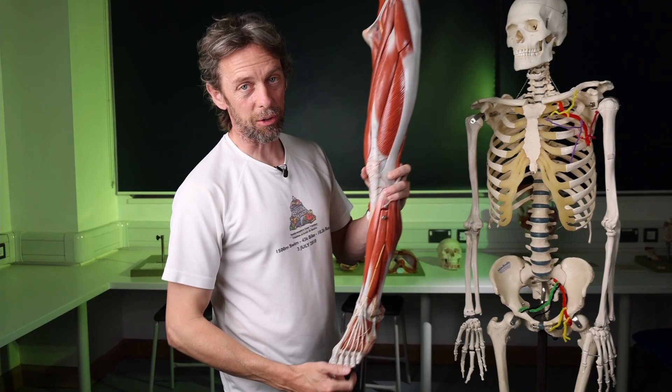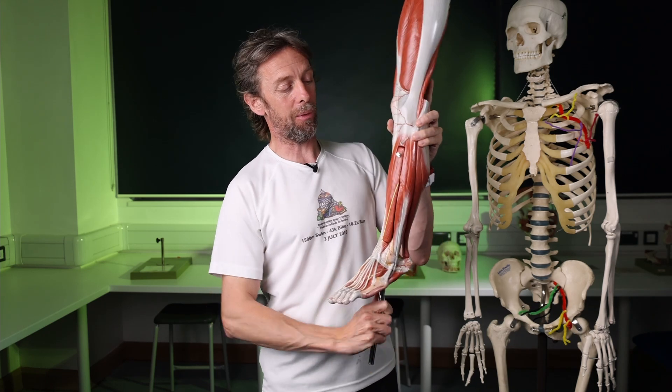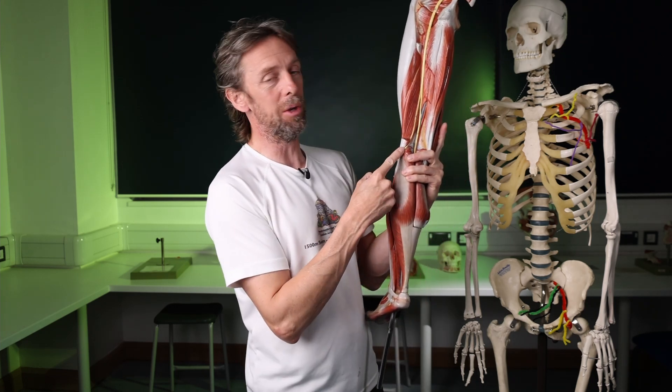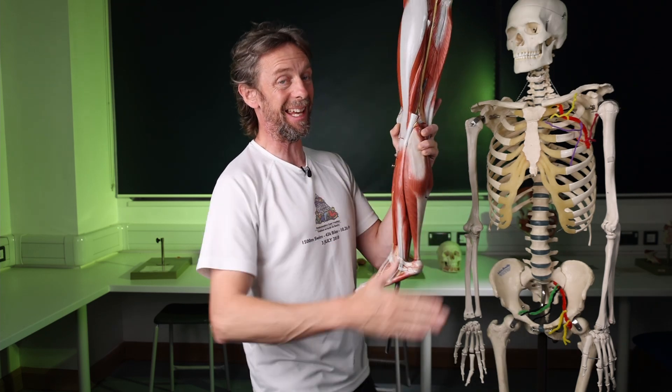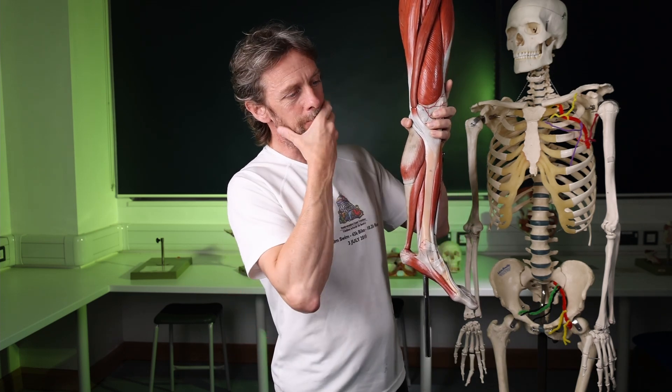Foot drop is an inability, weakness, or difficulty in dorsiflexing — lifting the toes towards the shin. It's a problem with the muscles that normally do that, but it tends to have a neurological cause. It can be caused by damage to the common fibular nerve because it's quite superficial, or it could be a more central cause — the sciatic nerve, the roots of the sciatic nerve in the lower back, or a more central neuropathological cause.